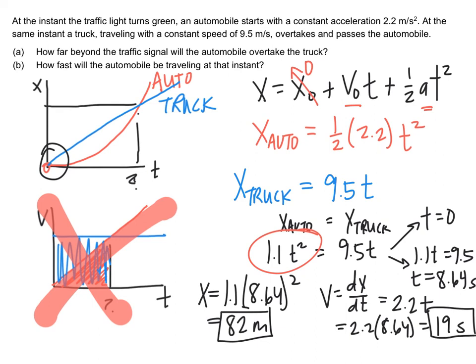So again, recap key things. We needed to make sure we wrote two separate equations. Don't try to put all the information into just a single equation. Two separate equations, one for the automobile, one for the truck. And in this case, we are looking for when they are at the same position at the same time. So you set those two equations equal to each other. It's a very common method for this style of problem.